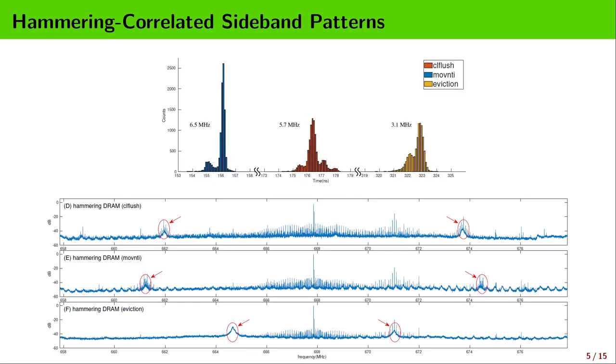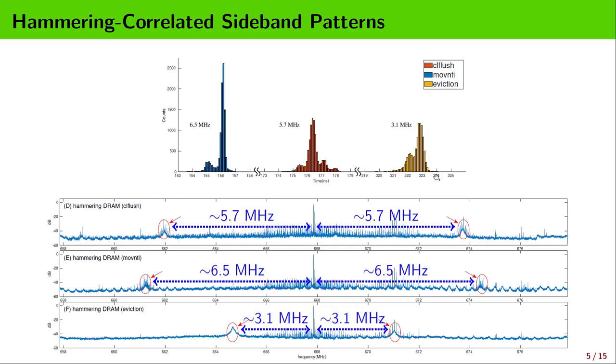Let's look at how fast the DRAM is hammered in each of the last three scenarios. On average, we can see CLFlush hammers at about 5.7 MHz, moving NT hammers at about 6.5 MHz, and eviction hammers at about 3.1 MHz. If we look at the spectra again, we can find that the locations of the patterns match the hammering frequencies and they conform to the effect of AM modulation. So these sideband patterns are hammering correlated.